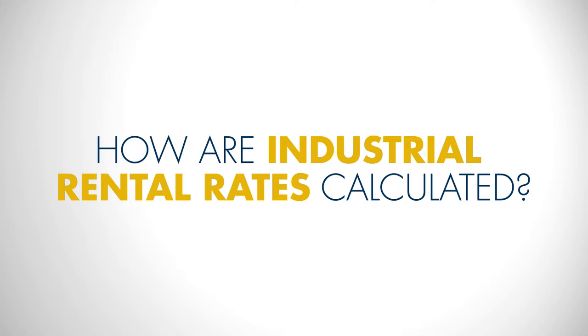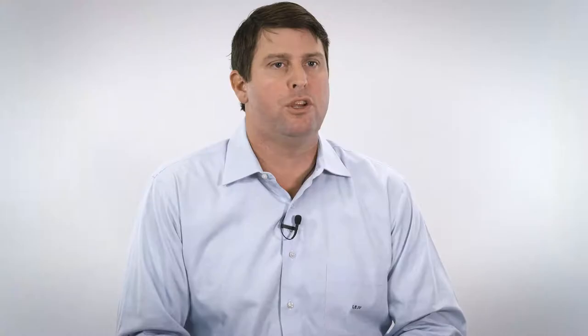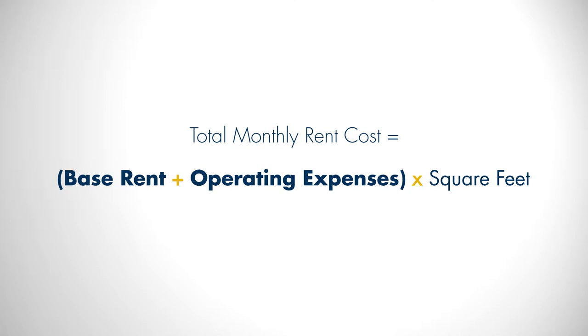In Austin, landlords quote rental rates two different ways. One way is a monthly rate, the other way is an annual rate. To find your monthly rate, you take your base rent plus your operating expenses times your square footage. For the annual, you simply take that equation and multiply it by 12.